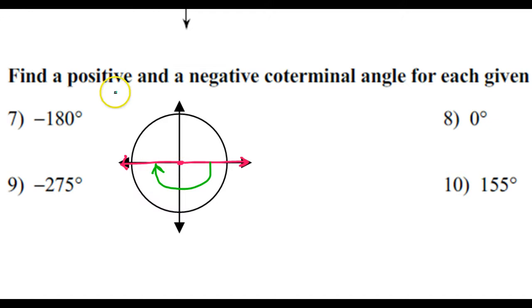Now we need a positive and a negative coterminal angle. So focusing on the terminal side, we need a positive angle that ends here and a negative angle that ends here, other than the one that we've already got.